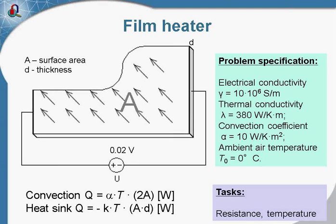This is the steel plate — the steel foil. We know the electric conductivity of the material and the thermal conductivity. We know the convection coefficient; this plate is cooled by the air flowing around it. The ambient air temperature is zero degrees Celsius. Our task is to calculate the resistance, the current distribution, and the temperature of this film heater.